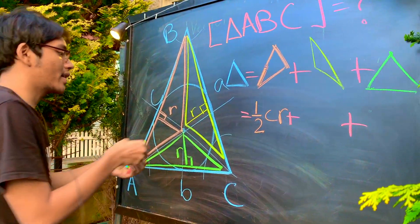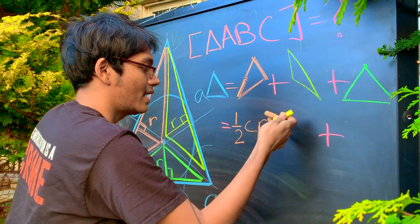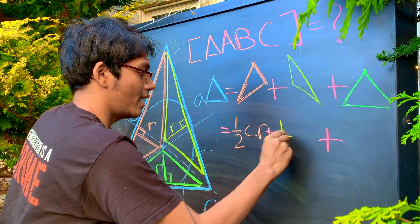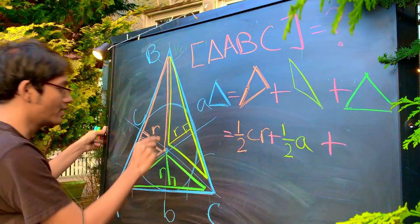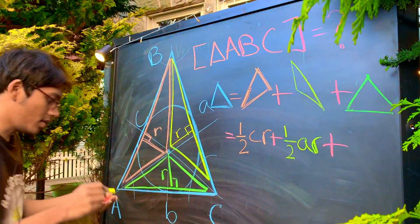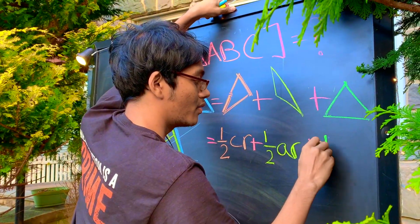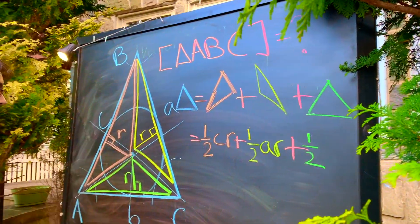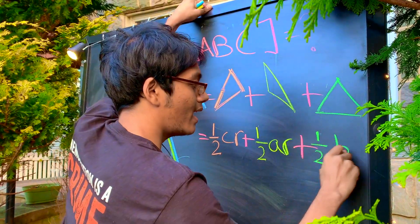What's the area of the yellow triangle? Well, it's half the base, which is A, times the height, which is once again the in-radius, R. And finally, what's the area of my green triangle? Well, finally, it's half the base, which is B, and the height, which is R.